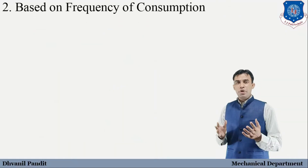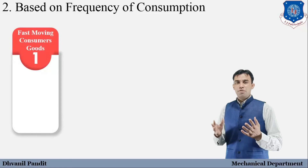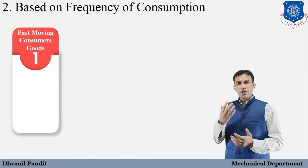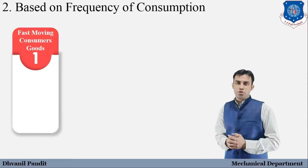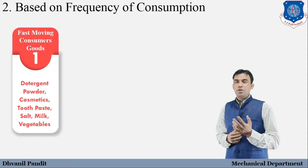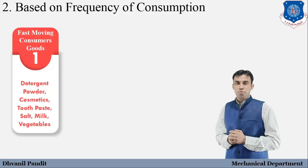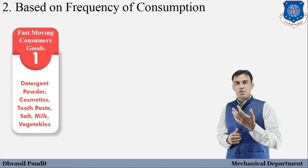The next step is based on the frequency of consumption. The first is FMCG, which stands for fast moving consumer goods. As the name suggests, these products have high demand in the market and are purchased repeatedly. Examples include detergent powder, milk, cosmetic products, salt, and vegetables. These products are in the FMCG segment because their consumption and demand is very high compared to other products.